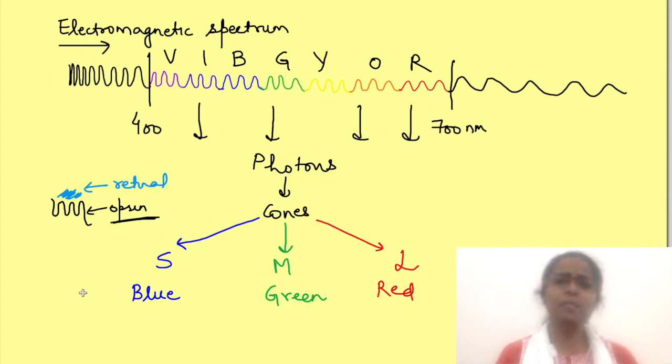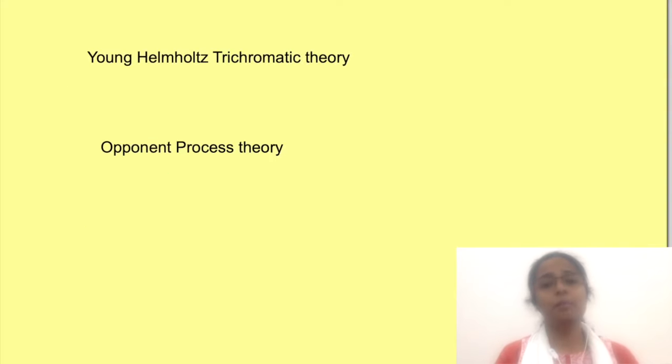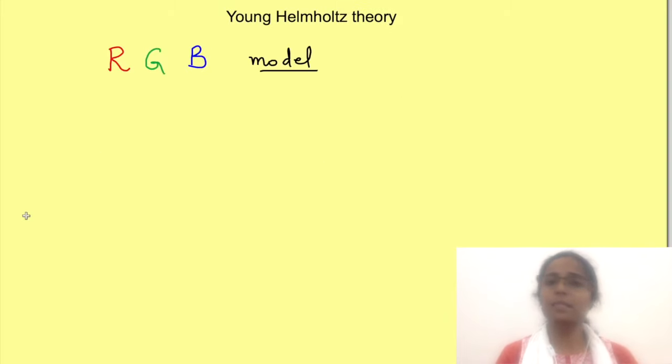But how do we perceive so many varied colors by only three cones? Well, there are certain theories which discuss this. Important ones being Young-Helmholtz's Trichromatic Theory and Opponent Process Theory. First let's see Young-Helmholtz's Theory.